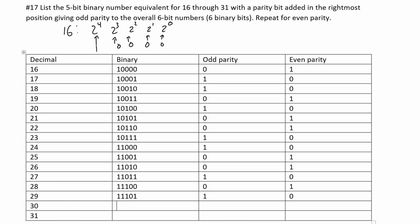30 is going to be 28 plus 2, so we're going to have 1 1 1 1 0. Since we have four ones, we're going to have a 1 for our odd parity because we have an even number of ones, and a 0 in our even parity for the same reason.